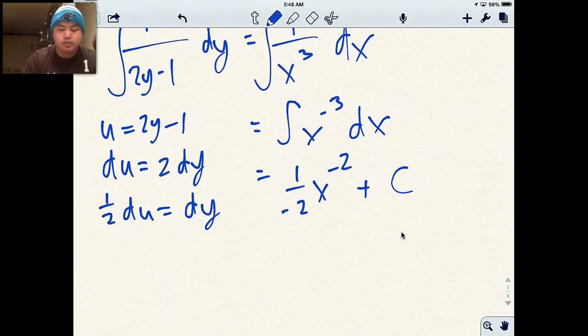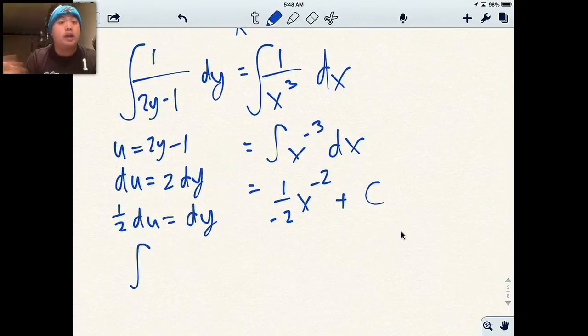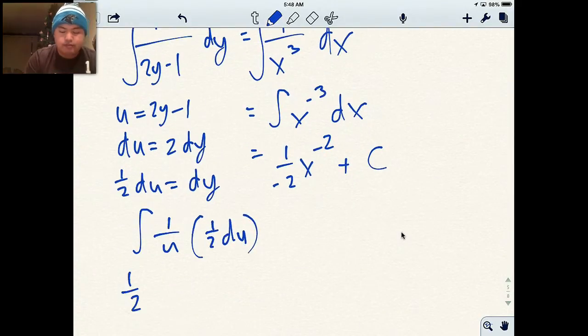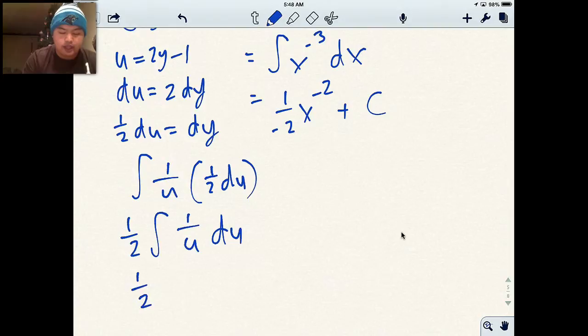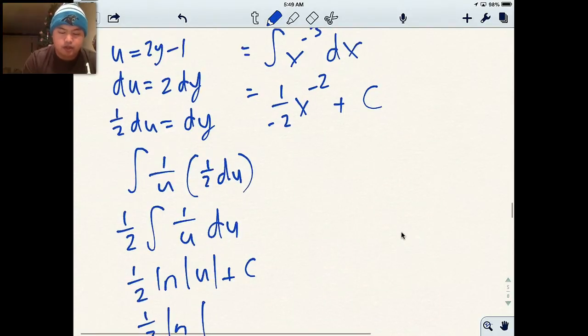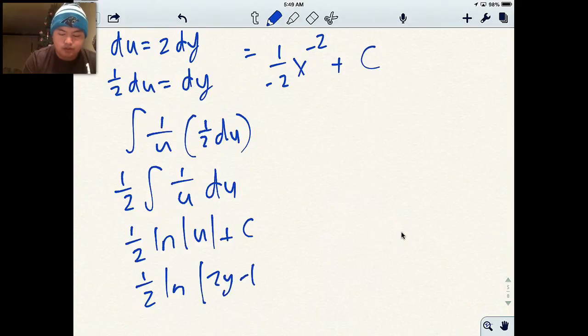So after doing my substitution, my denominator now just becomes u and this dy just becomes half du. I could factor out that half, which you've seen before. And now I just have the antiderivative of 1 over u. And the antiderivative of 1 over u is ln absolute value u. And I'll plug the y back into the equation. So my answer is half ln absolute value 2y minus 1 plus c.